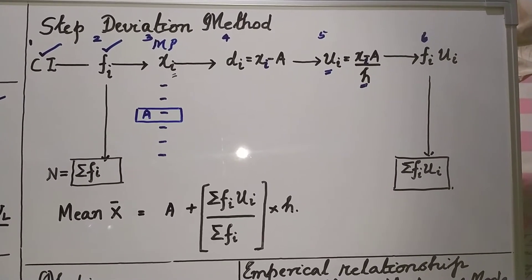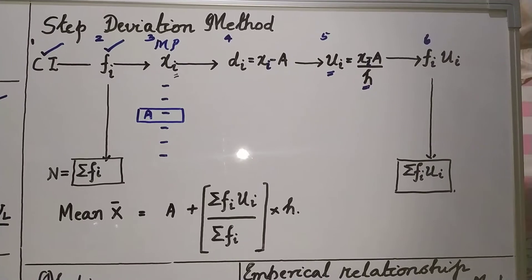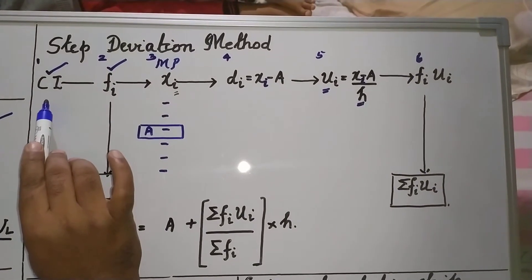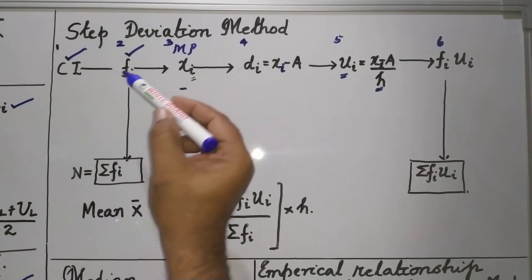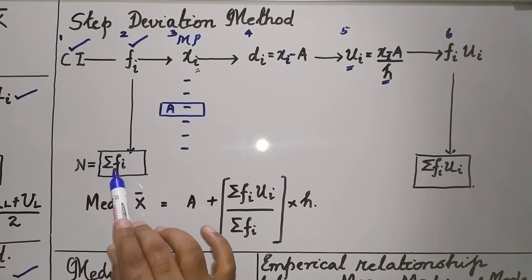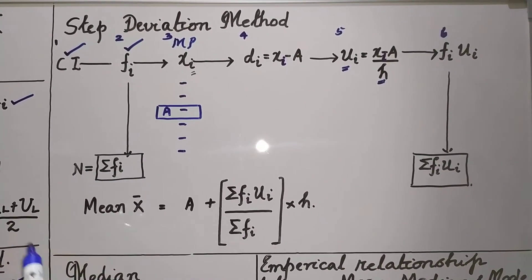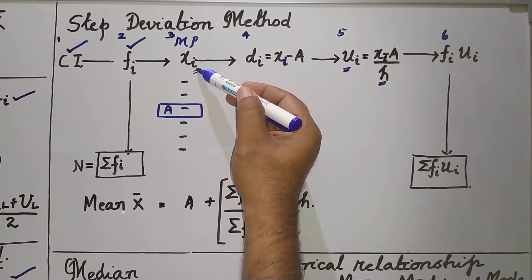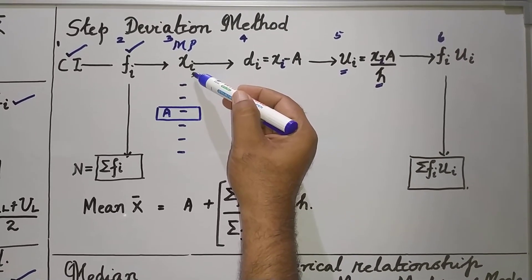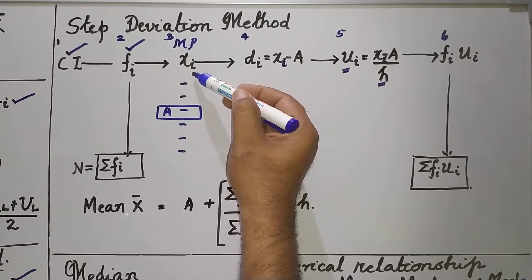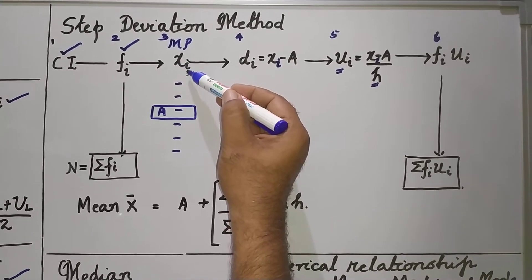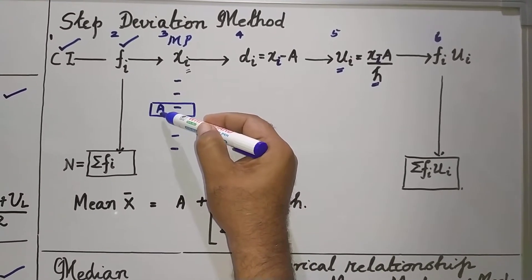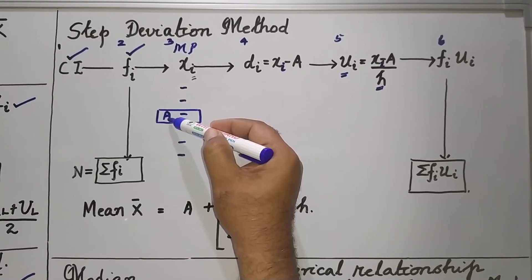Dear friends, the third method of finding the mean is by step deviation method. They will give you the class interval and the frequency. Add up the frequency column to get sigma fi, which is nothing but n. Find the midpoint or the class mark by using the formula: lower limit plus upper limit divided by 2, that is xi. From among the midpoints, choose one of the scores as the assumed mean, capital A.